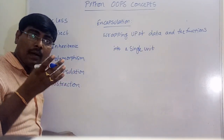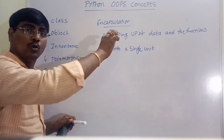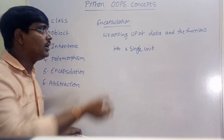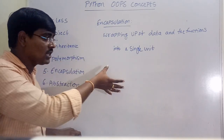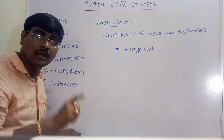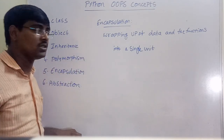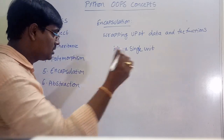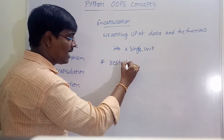Encapsulation is the binding or combining of data and the code that uses the data — the functions — into a single unit. When attributes and functions are written inside a class, they are all bound under the class name — that is encapsulation. The main advantage of encapsulation is restricted access.